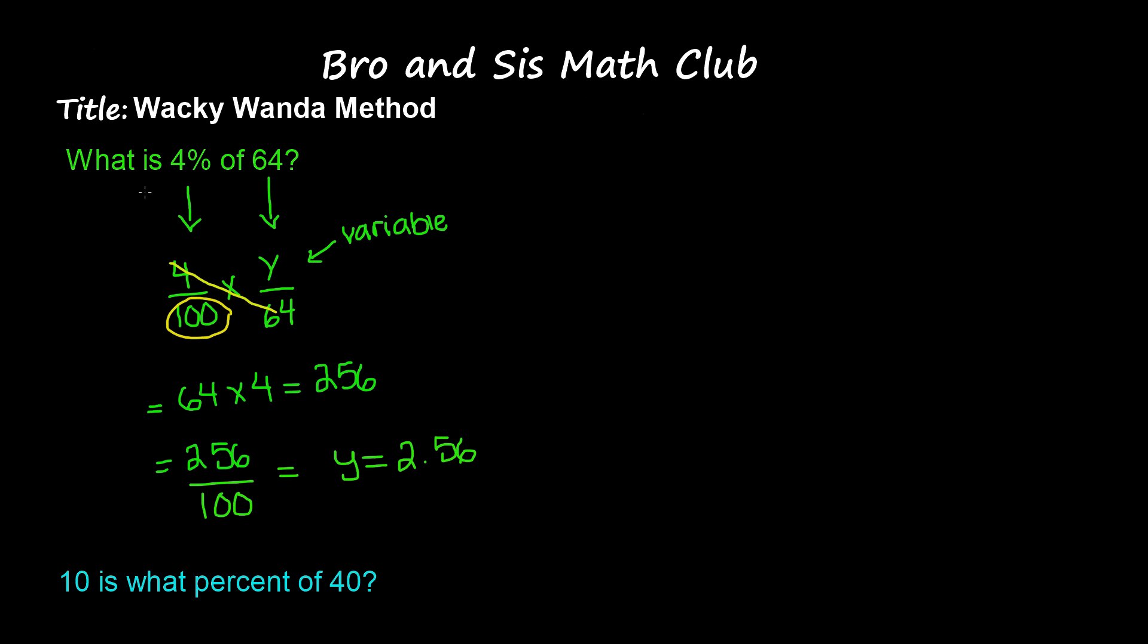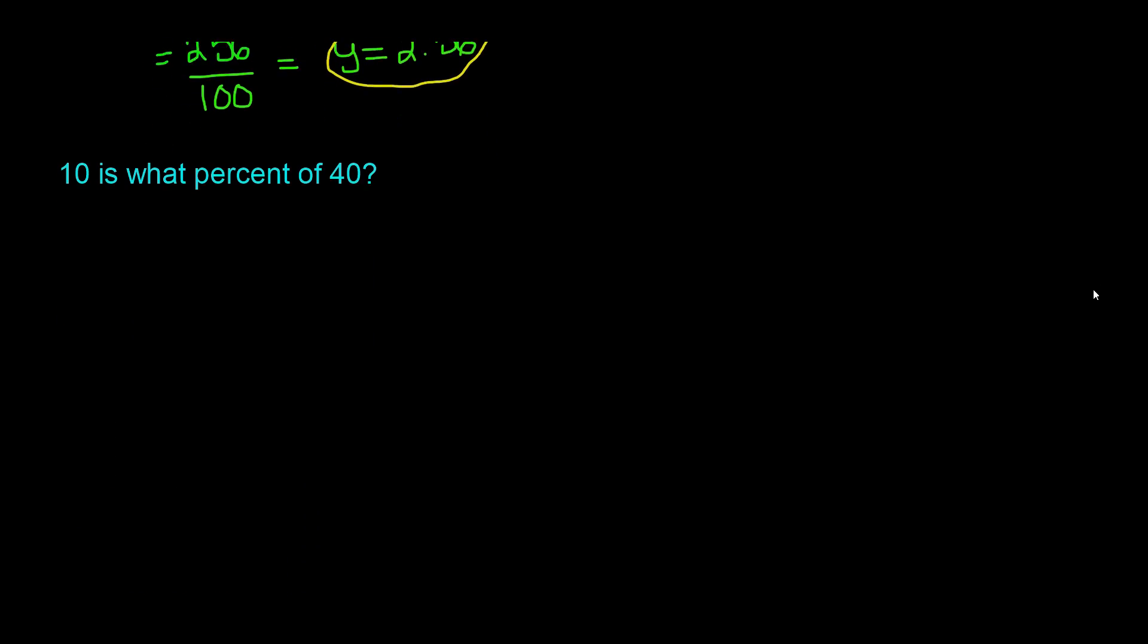So that's going to be our answer for this problem. What is 4% of 64? It's 2.56. Now let's do another example.